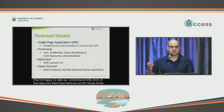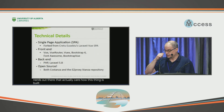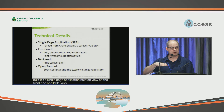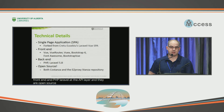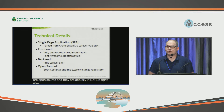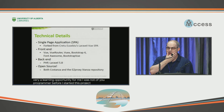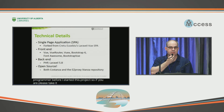For those who actually care how this thing is built: it's a single page application built on Vue on the front end and PHP Laravel at the API layer. They are open source and actually in GitHub right now. The stanza repo and the Costanza code itself — I would encourage you to have a look. This was a learning opportunity for me; I was not a Vue programmer before I started this project, so please take it easy on me when you look at that code. But I would encourage you to contribute if you can.